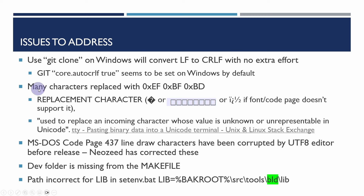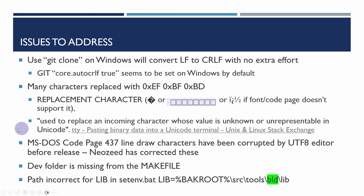One of the problems with the source that's been released is that many characters have been replaced with a rather strange combination: EFBFBD. This should be represented as a replacement character if you're looking at it in a tool that knows how to handle it, or you may see square characters. The replacement character is used to replace an incoming character whose value is unknown or unrepresented in Unicode — this is really where the whole problem is: the very early DOS world meeting the modern Unicode world.